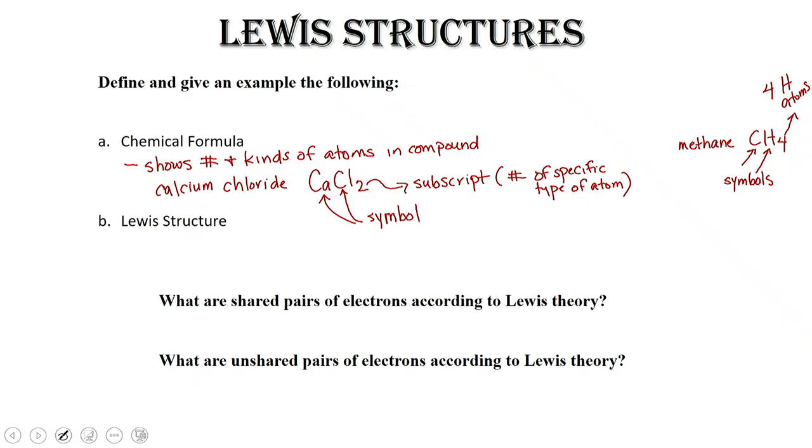Notice here we have calcium chloride. This is an ionic compound. CMPD stands for compound, and it's representing that I have one calcium ion and two chloride ions. Over here for methane, the four represents four H atoms.